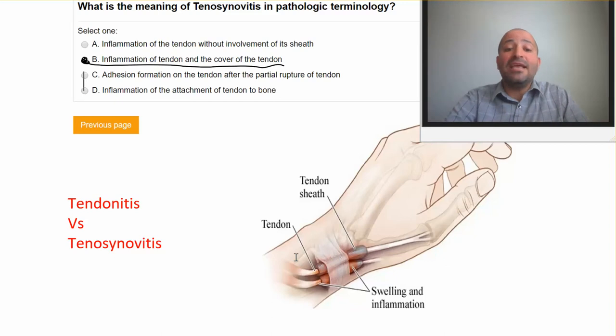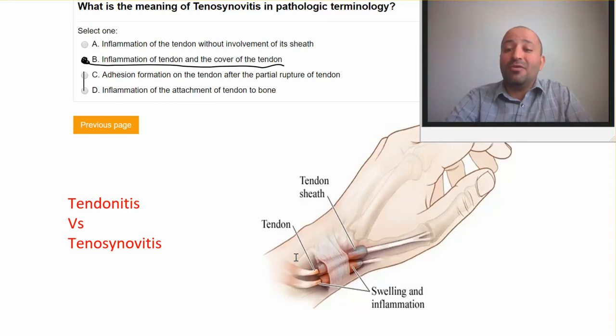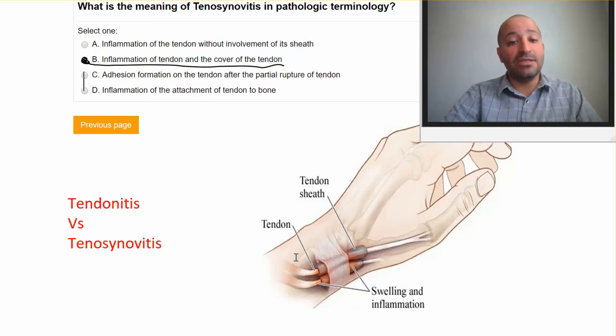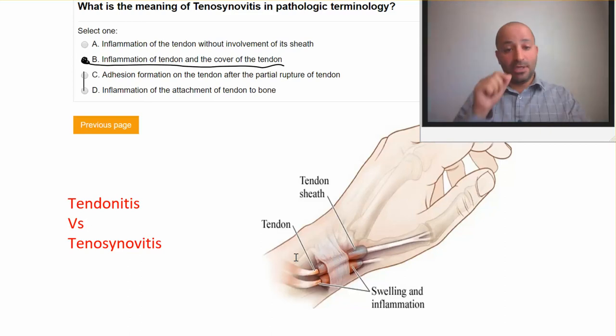Option D — inflammation of the attachment of the tendon to the bone — is more general. That's more tendonitis rather than tenosynovitis. So the answer is B.